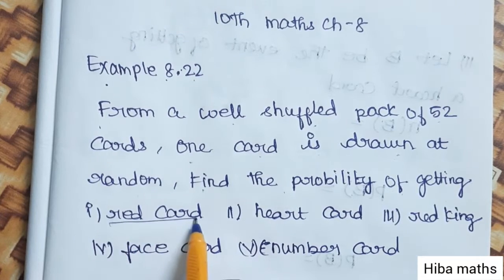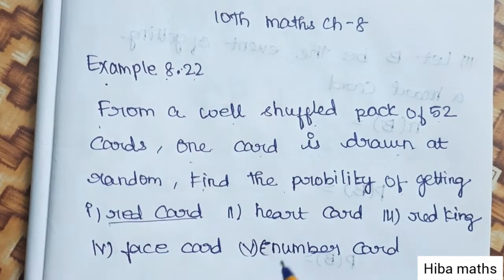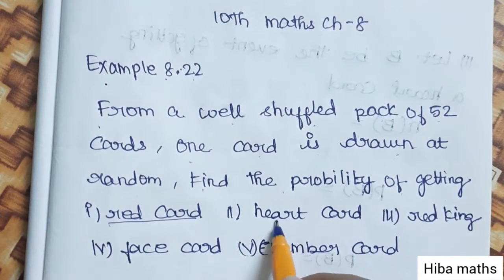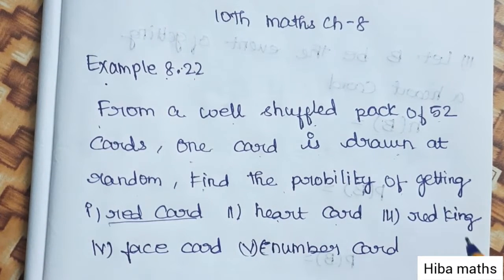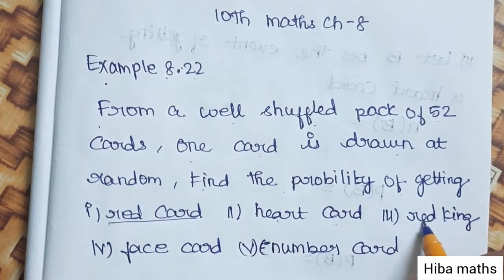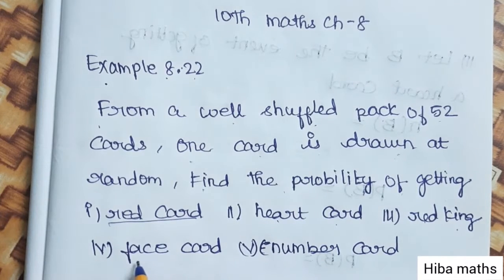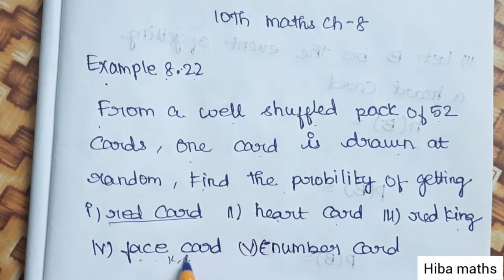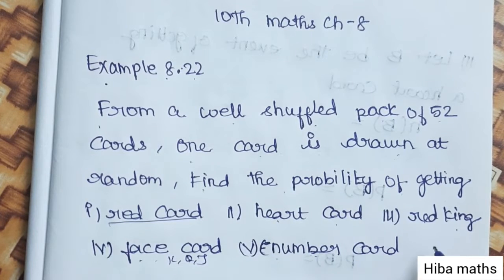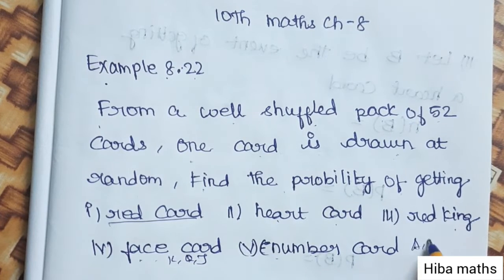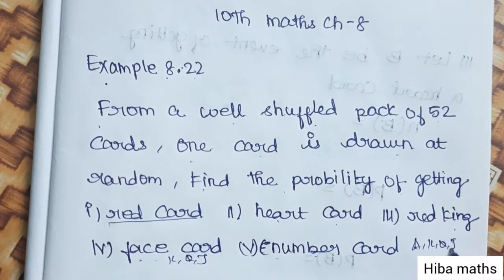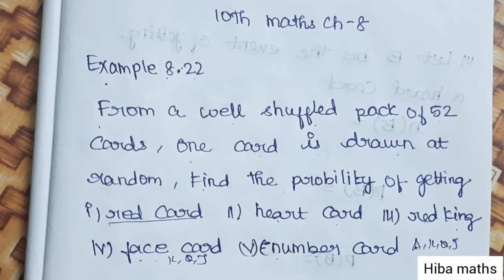First, a red color card. Second, a heart card. Third, a king card. Fourth, a face card — that is king, queen, jack. Fifth, a number card — that is a card that is not king, queen, jack, or ace, but a number card.